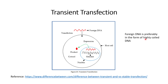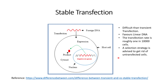The foreign DNA most suitable for transient transfection is in the form of highly coiled DNA. Here we can see an example of how the foreign DNA enters inside the cell, how it is not integrated with the host genome, and how it will produce the protein coded within this DNA until the cell is alive.